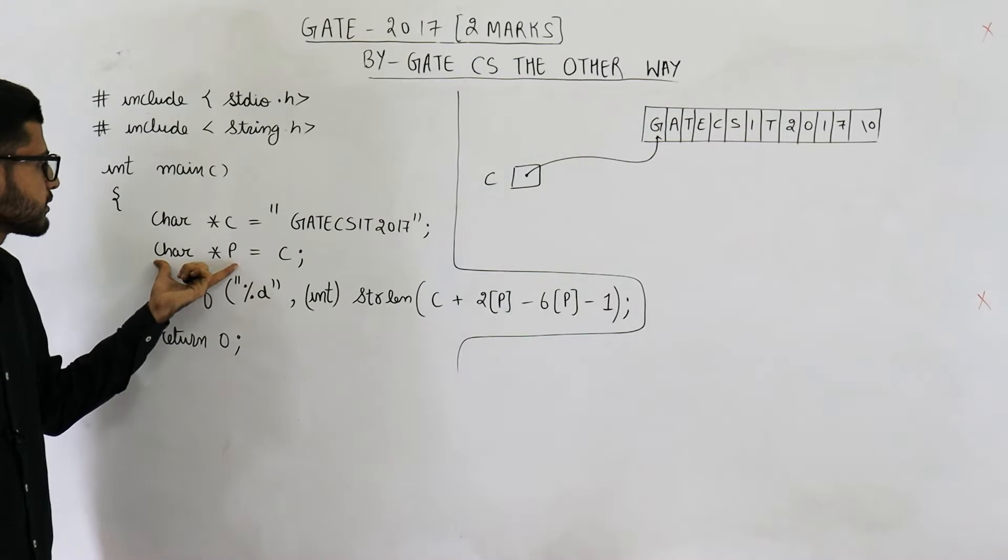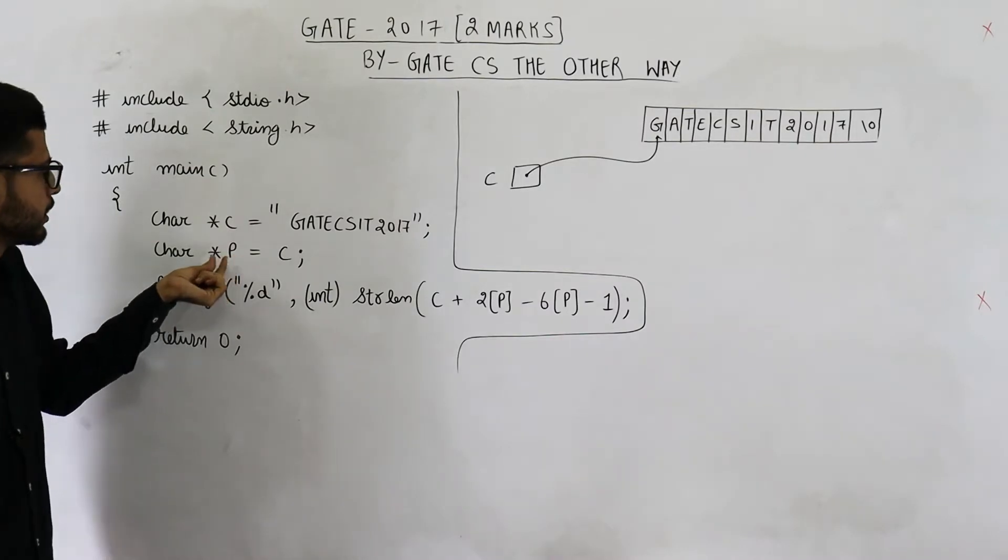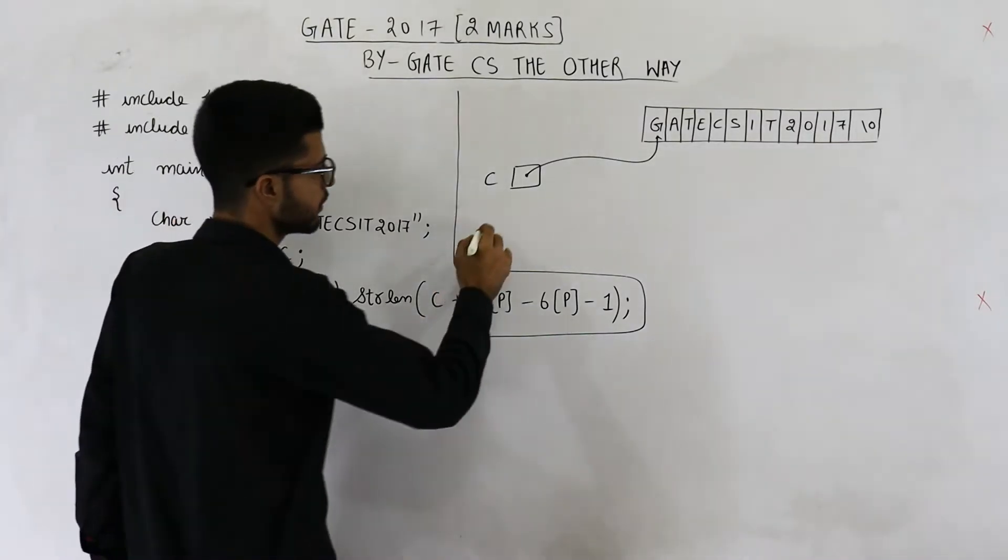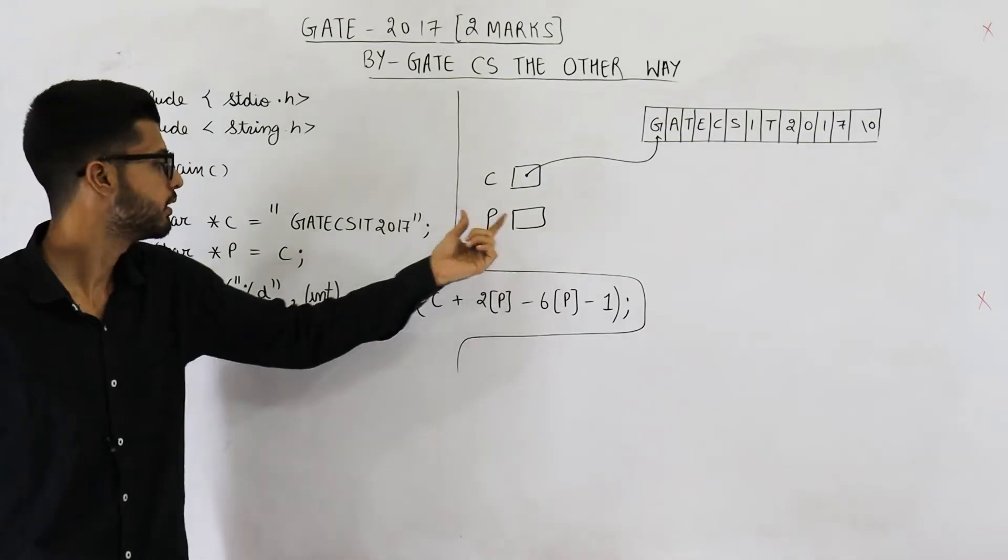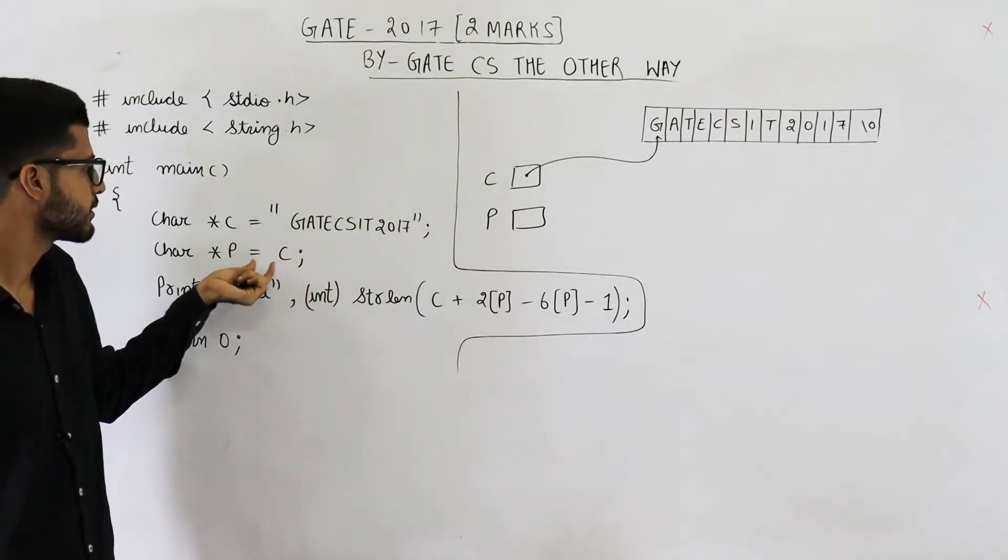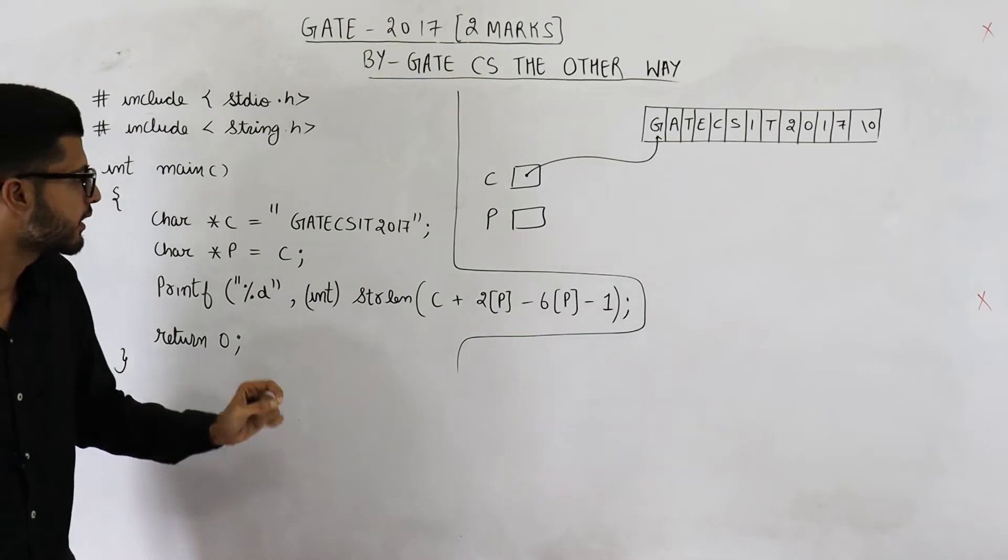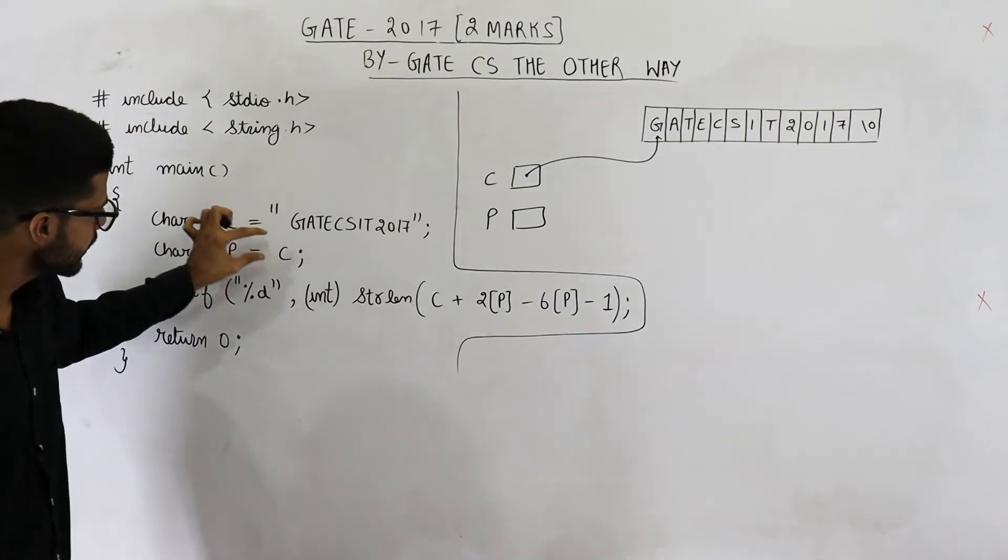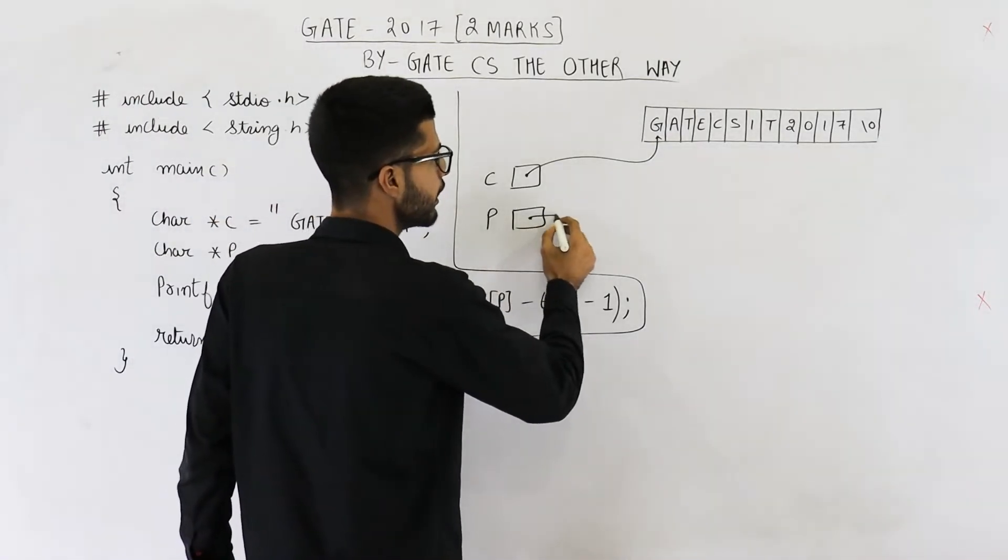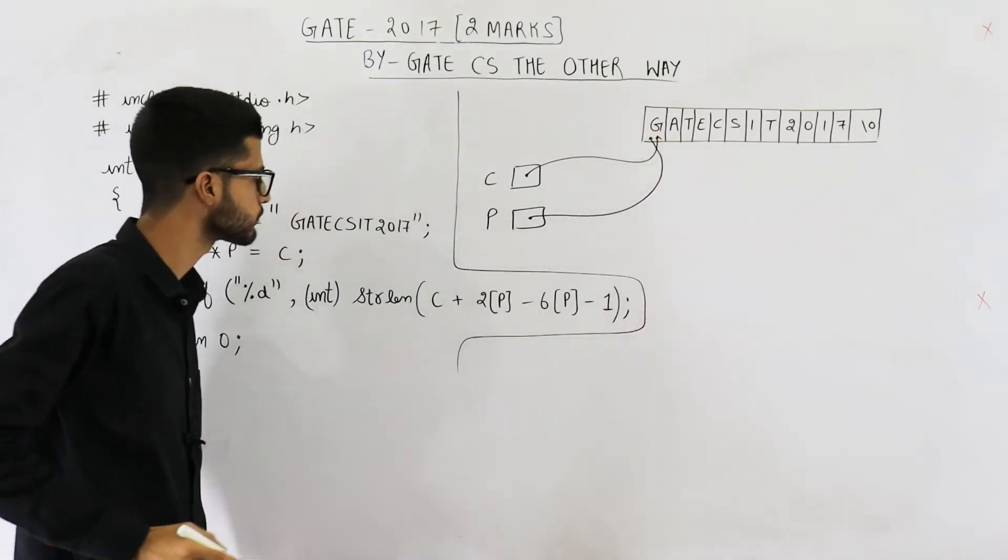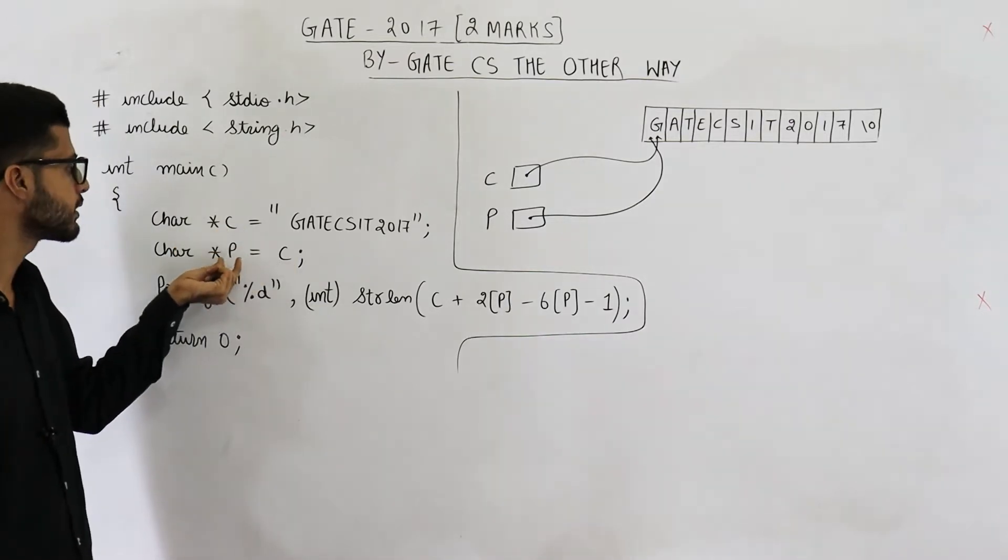The next line is char star p. This is also same thing. That means you are declaring a variable p which is of the type pointer to character. What is the value stored in this variable p? Its value is same as the value stored in C. What is the value stored inside C? C is a pointer and C contains address of this G. We are taking that address only and we are assigning it to P also. That means P will also point to G only. See, whatever is stored inside G will be some address. We are assigning that same address to P.